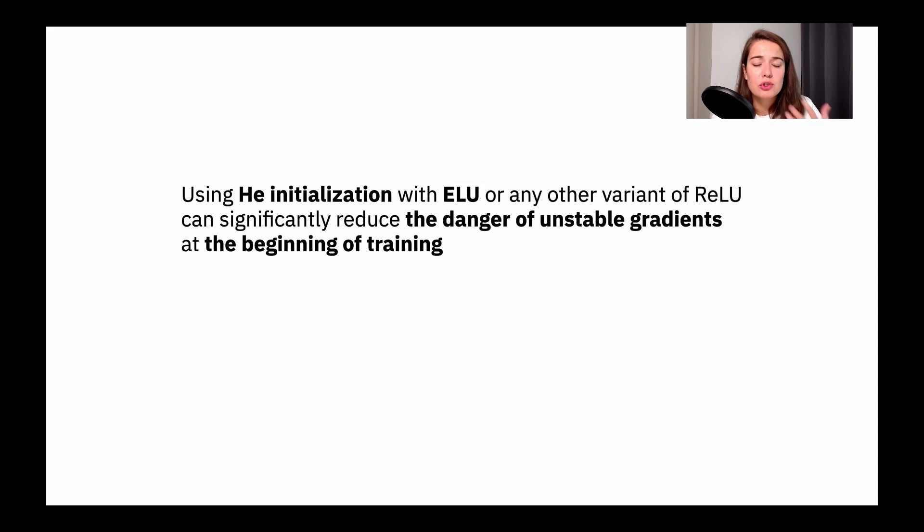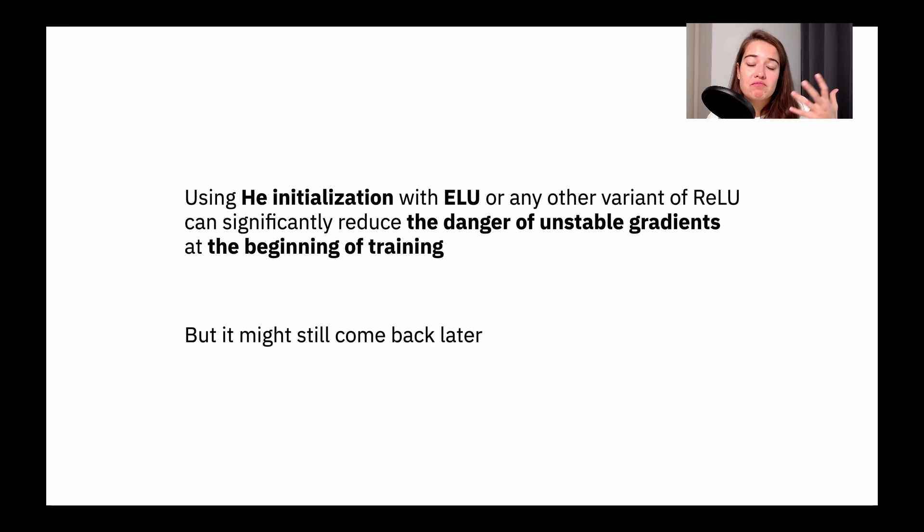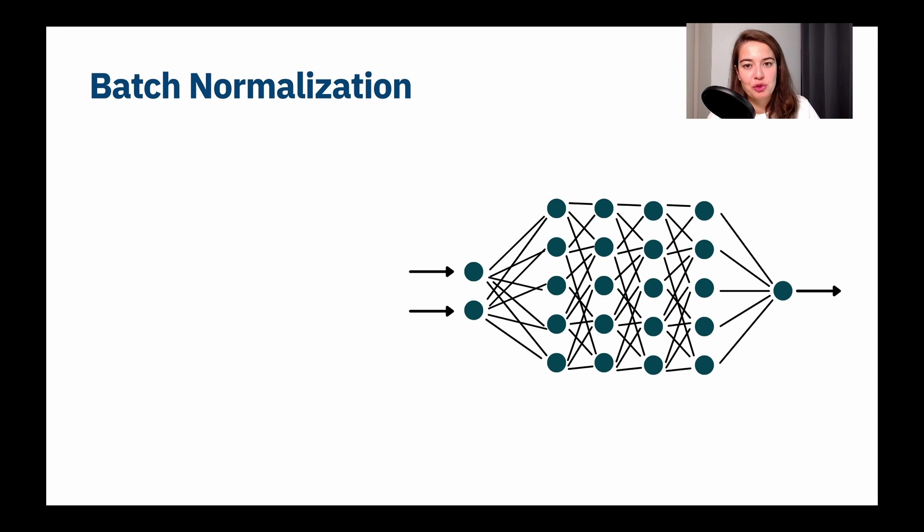All right. Using the correct activation initialization with the correct activation function can significantly lower the chances that you're going to have an unstable network with unstable weights. But sometimes that only stops the unstable gradient problem from happening in the beginning, and towards the middle parts of training or towards the end, you might actually get the unstable gradients problem again. So what we would do then is batch normalization. I feel like batch normalization is kind of like the superhero that the whole deep learning community is very happy about. So let's talk about what that is.